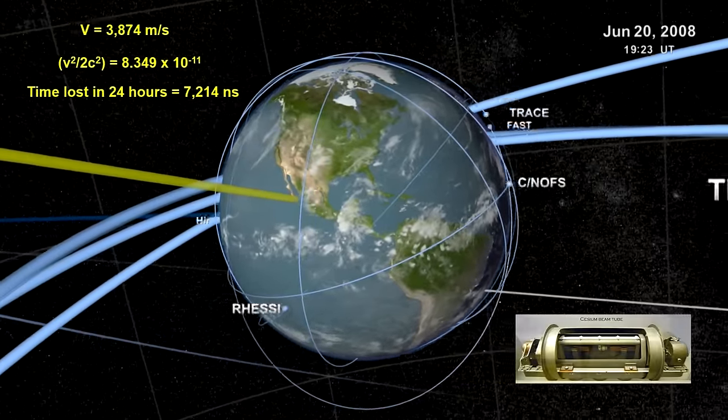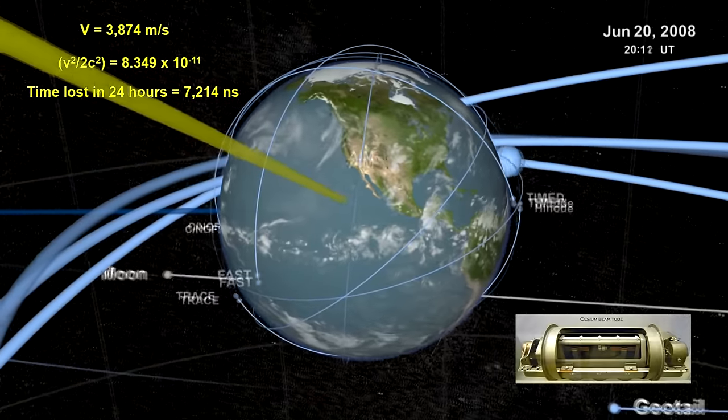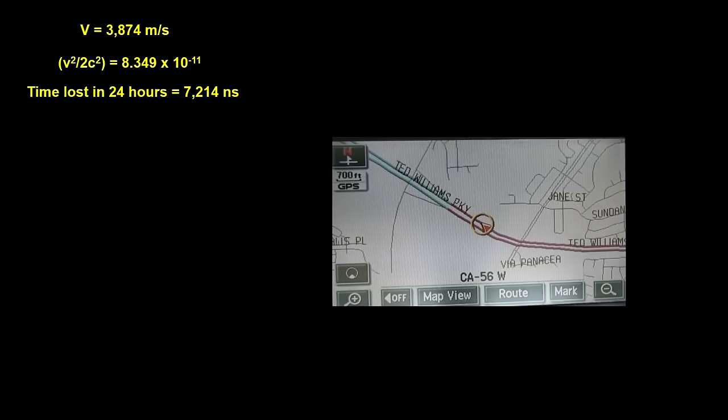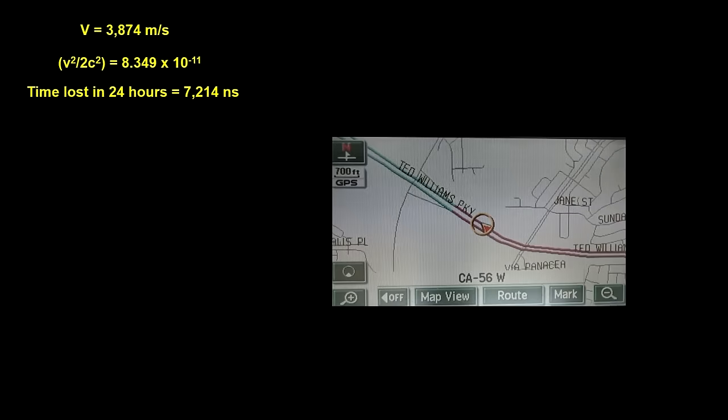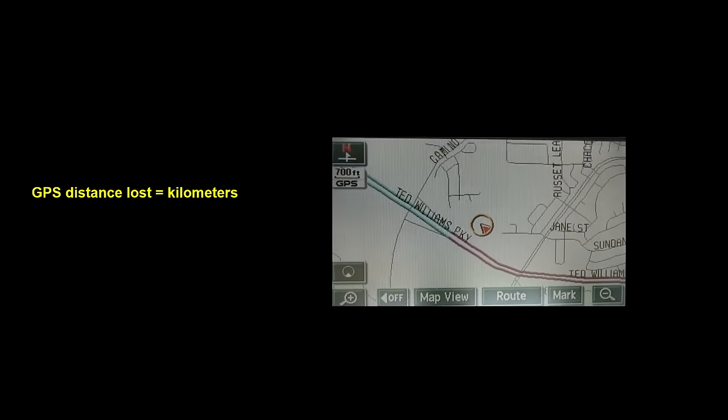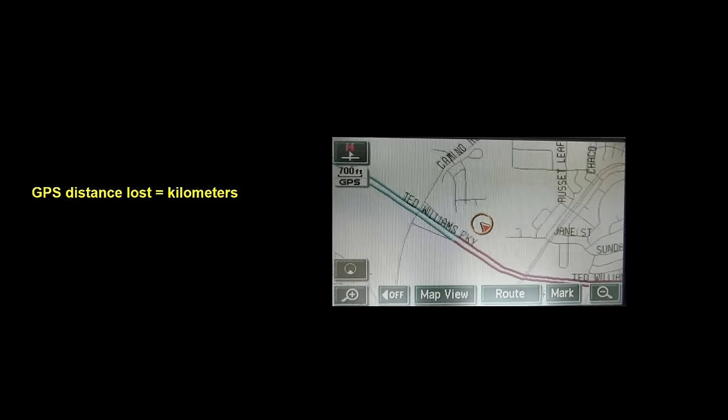But these onboard clocks lose 7,214 nanoseconds a day due to time dilation. If onboard clocks aren't corrected regularly based on Lorentz's time dilation formula, the position data they produce would be off by kilometers in less than a day.